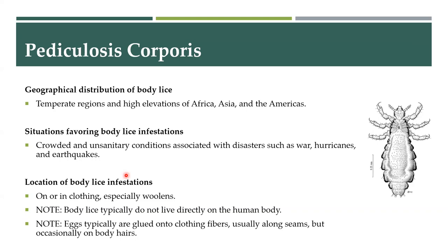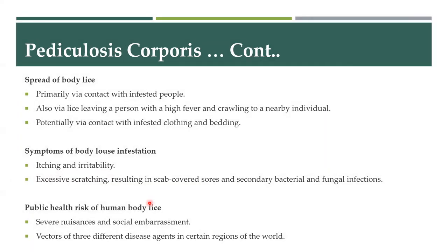The location of the body louse is actually in the clothing — it will typically not be found on the body itself. It will bite to take a blood meal and then attach itself back on the clothes, so you normally won't find it on the body unless there is very heavy infestation. Eggs are typically glued onto clothing fibres or the seams of the clothes, but occasionally can be on body hair as well. It is primarily spread via contact with infested people, or by sharing clothing or beddings. Symptoms are itching and irritability, and secondary infections can result from scratching.